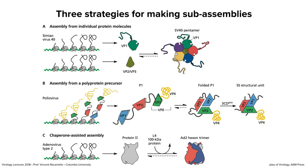Another example uses a chaperone to assist sub-assembly. For adenovirus hexon, the trimer of three copies of protein 2 is translated independently and assembles into a trimer that forms hexon arrays in the virus particle. This trimerization is assisted by a viral protein, L4, which acts as a chaperone — it accelerates the process and makes it less error-prone. This is typical for many assembly reactions; although they can occur without assistance, chaperones are often provided.